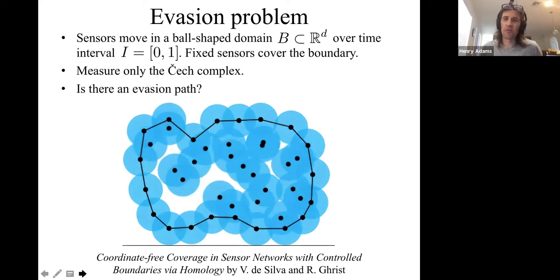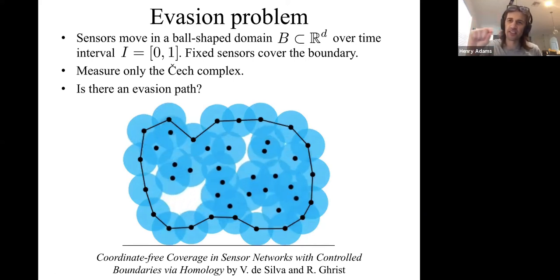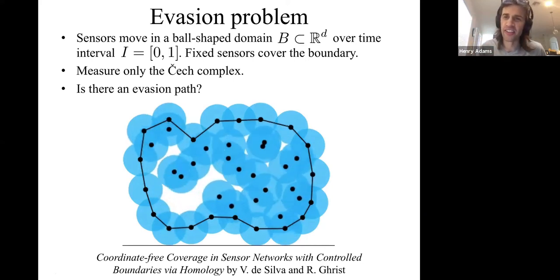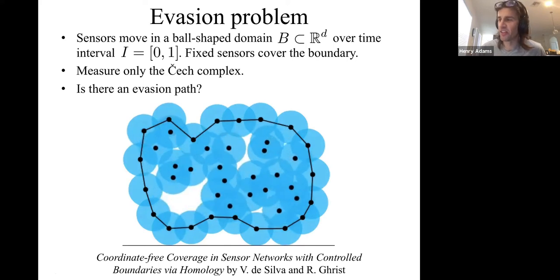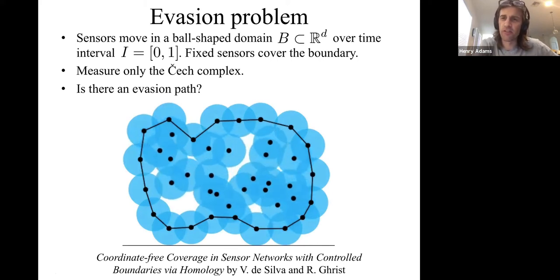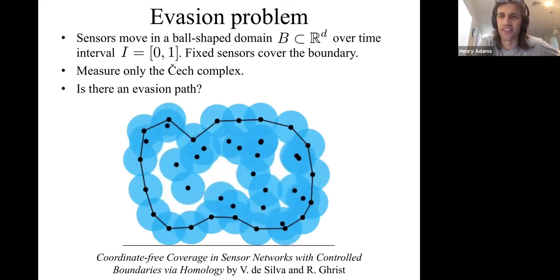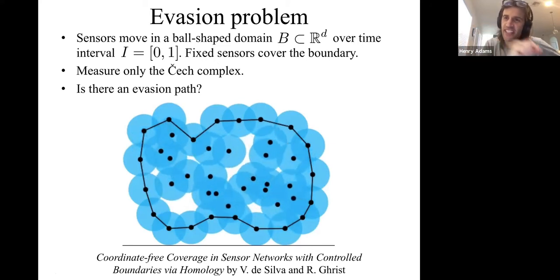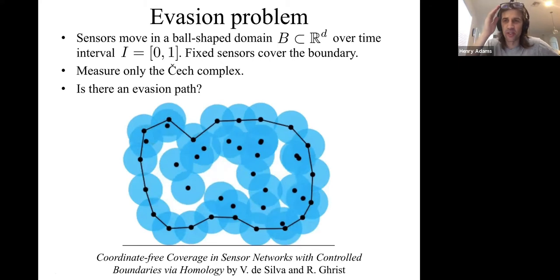We're considering this problem where sensors are moving in a bounded domain, with sensors on the boundary which aren't moving, but sensors in the interior might be moving. We want to ask, is it possible for an intruder to move continuously and never be seen by these sensors? Can you move continuously and never be hit by one of these blue balls?